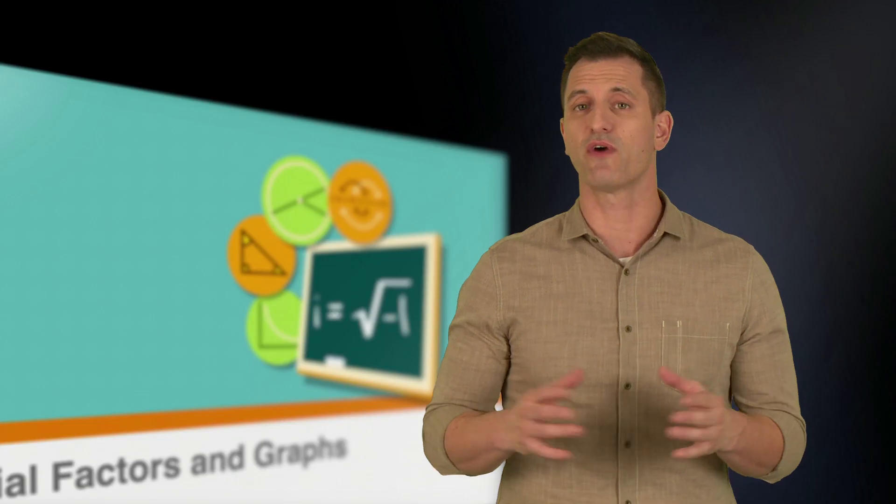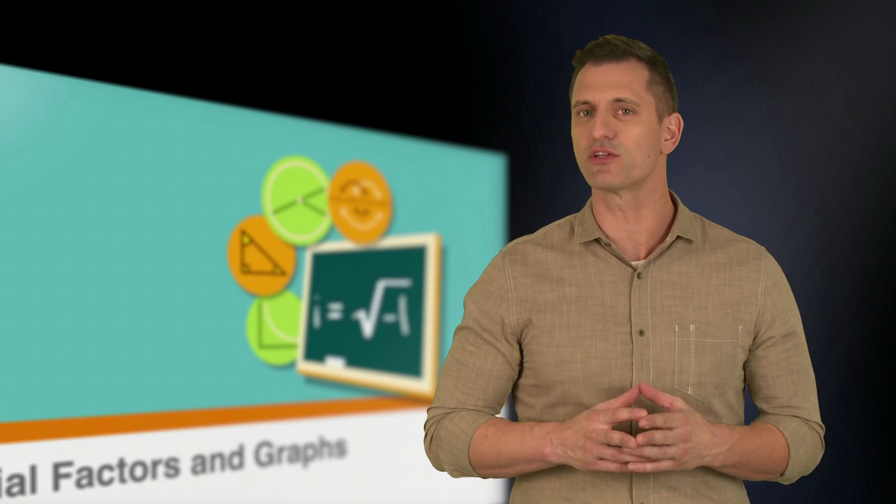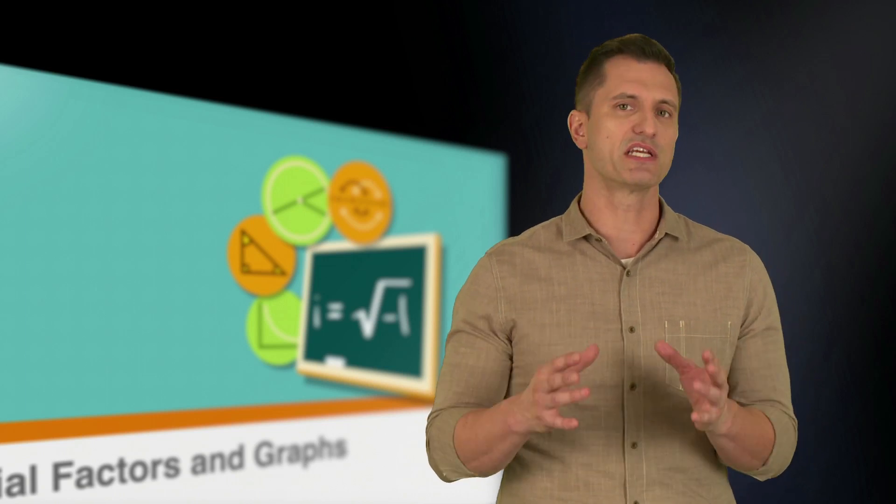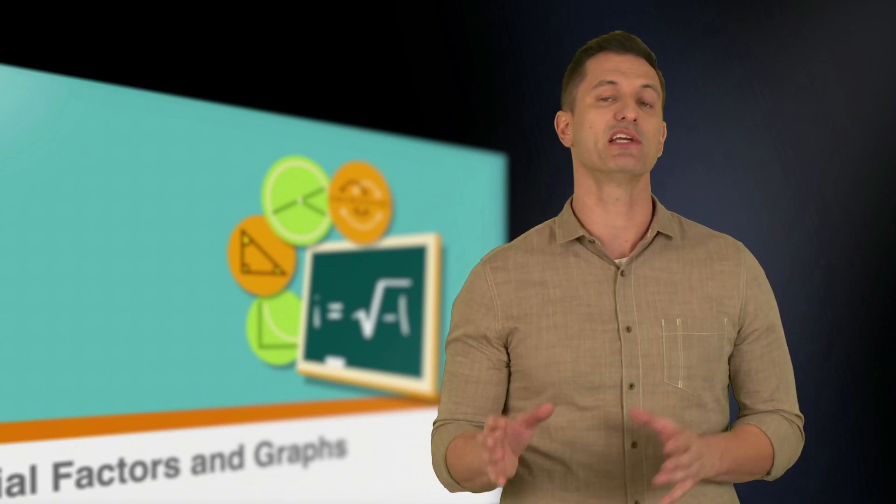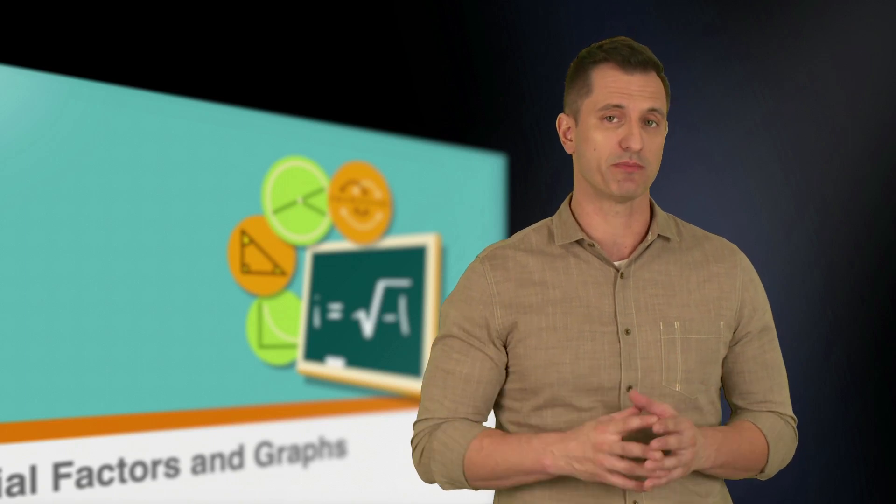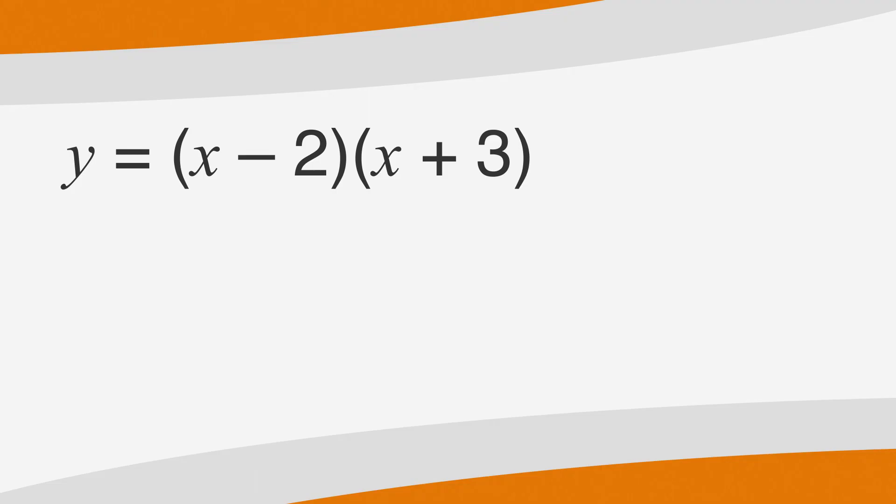We can also find the zeros of a polynomial just by looking at its equation. The zeros are any numbers that would make the equation equal to zero when you plug them in. For example, in the equation y equals x minus 2 times x plus 3, the zeros are any values for x that will make y equal zero. We have two sets of parentheses being multiplied together. If the contents of one of these parentheses equal zero, then the whole equation will be equal to zero.